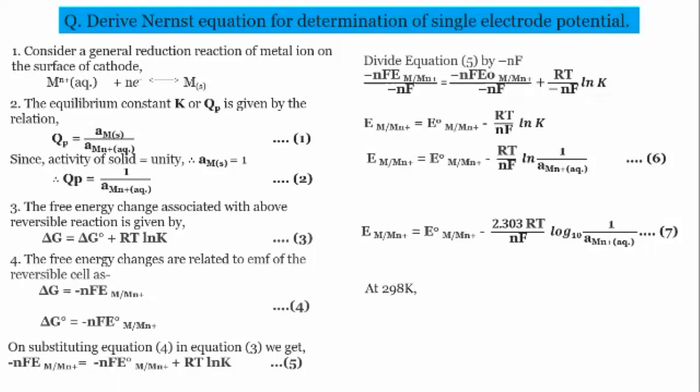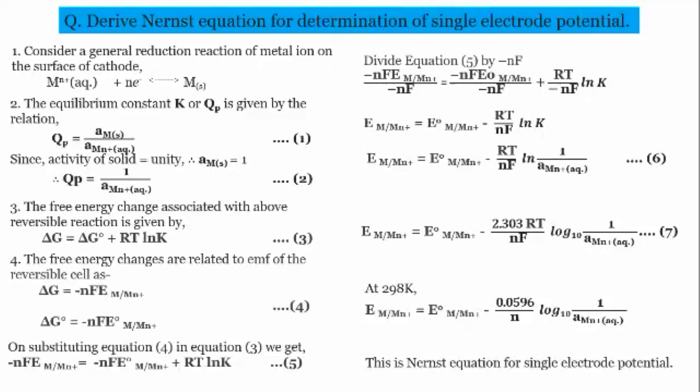At 298 K, R is the gas constant, temperature is 298 K, and F is 96500 Coulombs (Faraday). After substituting all these values, we get the final equation: E(Mn+) = E°(Mn+) − (0.0592 / n) × log [1 / a(Mn+ aqueous)]. This is the Nernst equation for single electrode potential.